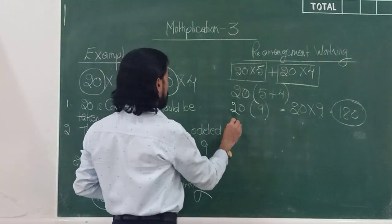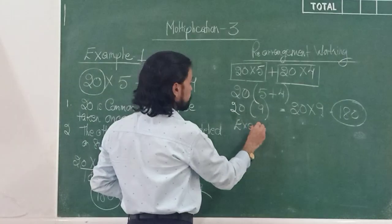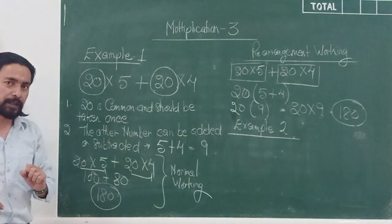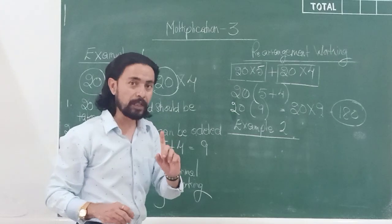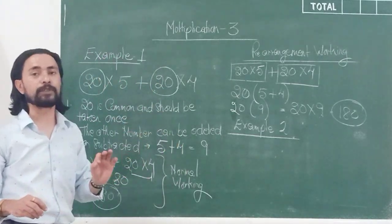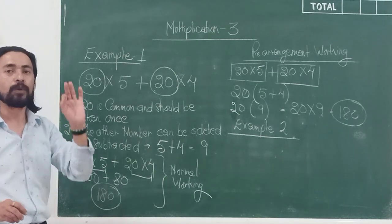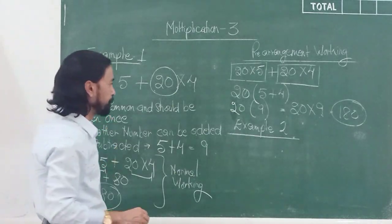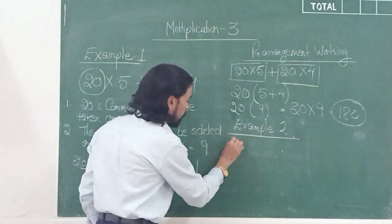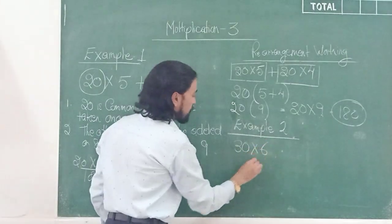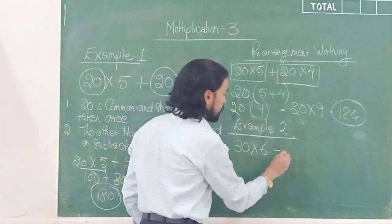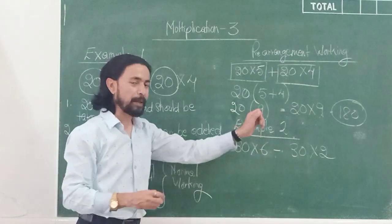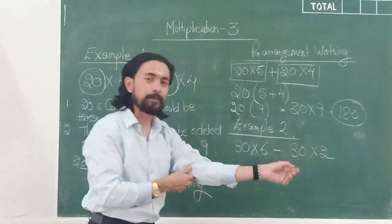Let's look at another example — example number 2. Now instead of addition, I will put subtraction. I hope you are going through the videos carefully, because the video tells you exactly how the sums are done; if you skip it, you will not understand. The example is: 30 multiplied by 6, subtract 30 multiplied by 2.